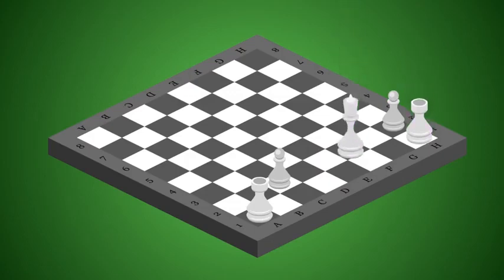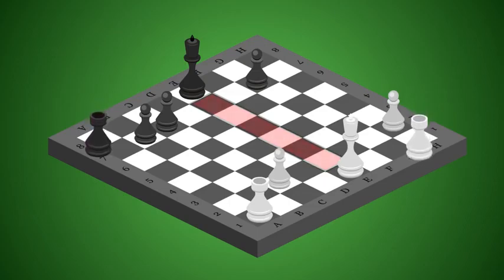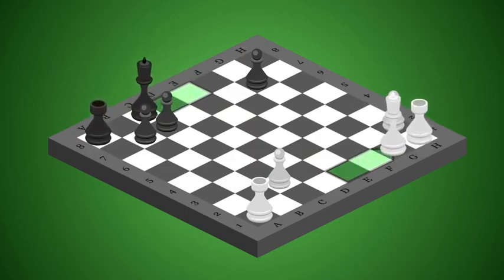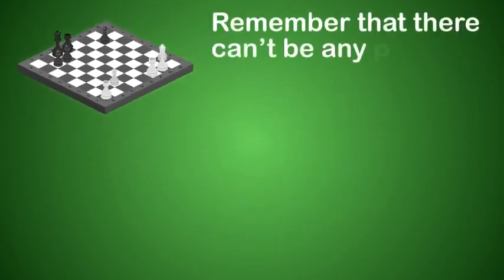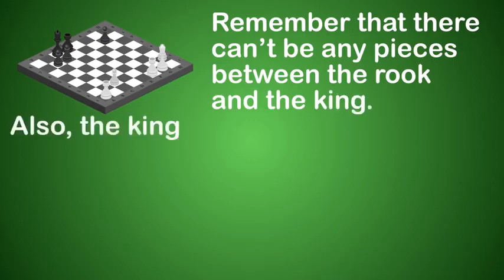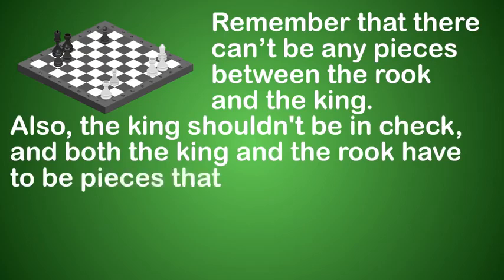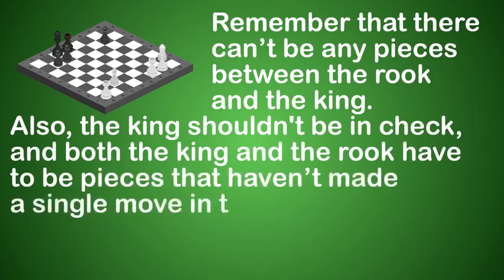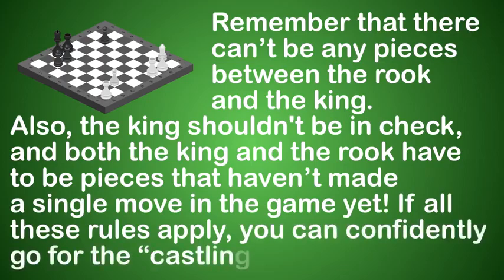Finally, there's a very useful castling move to protect the king. It's used to get the king out of the middle of its rank where he's exposed to the most danger. To make the castling move, move your king two squares toward any rook and then hop that rook over the king so it lands on the square next to the king. Remember that there can't be any pieces between the rook and the king. Also, the king shouldn't be in check, and both the king and rook have to be pieces that haven't made a single move in the game yet. If all these rules apply, you can confidently go for the castling move.